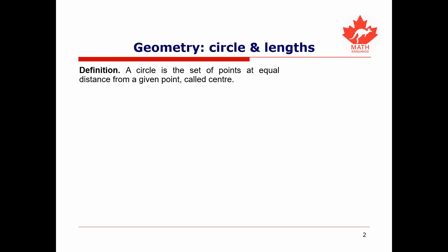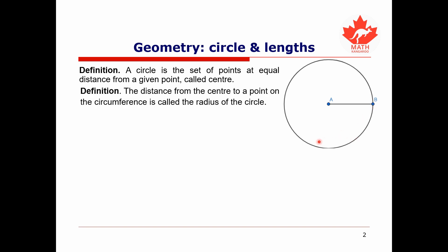Now we all know what a circle is, but let's define it. A circle is the set of points at equal distance away from a given point called the center of the circle. Here's a diagram of a circle which has a center A, and all the points at equal distance away from A form the circle. The distance from the center to any point on the circumference is called the radius of the circle.